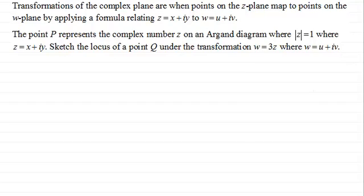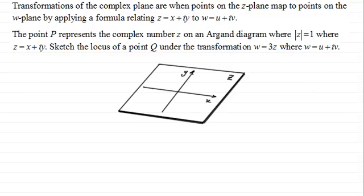If we take an Argand diagram drawn in the z-plane, let's say it looks something like this. What I've done is I've tried to draw this in three dimensions rather than looking at it just in two dimensions. So we've got it slightly tilted, this plane here.